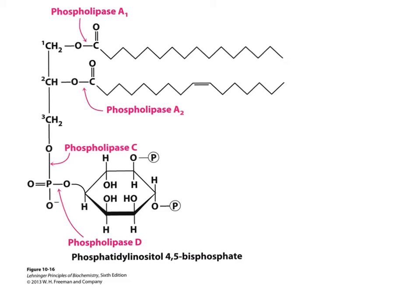A very important step in the formation of the eicosanoids is the cleavage of arachidonic acid from the phospholipids that make up the cell membrane. There are a number of different phospholipases available.